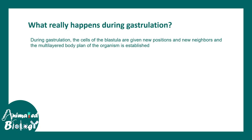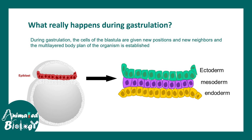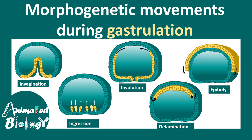What really happens during frog gastrulation? During gastrulation, the cells of the blastula are given new positions, they get new neighbors, and they form a multicellular body plan. This is a common theme in any kind of gastrulation, where one layer of cells eventually gives rise to multiple layers which form ectoderm, mesoderm, and endoderm. There are characteristic morphogenetic movements — like invagination, ingression, involution, delamination, and epiboly — which are all really essential during gastrulation.